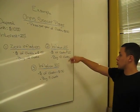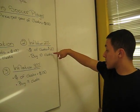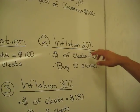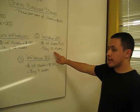And now we have the 20% inflation rate. All right, the price of the cleats goes up to $120 because of the inflation. Thus, he can only buy 10 cleats.